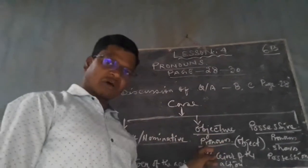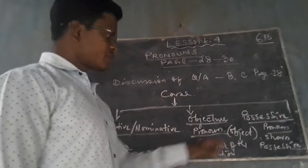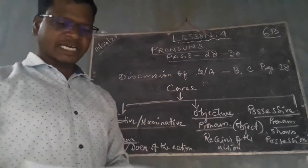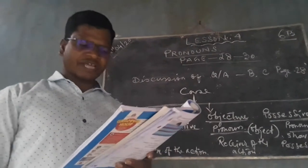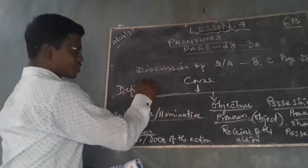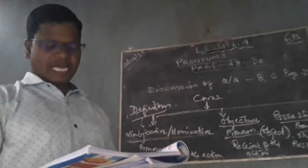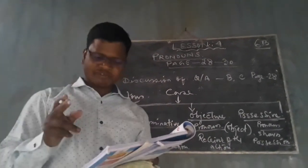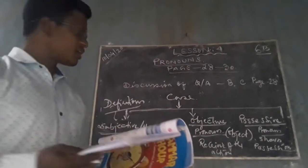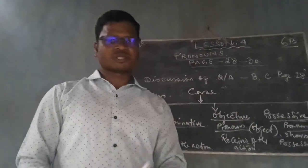If the pronoun is the receiver of the action, it is the objective case. If it shows possession, it is the possessive case. Write the definitions of subjective case, objective case, and possessive case, and make a chart as given on page number 29. The next day we will continue with the exercises. If any doubts are there, please inform me. Thank you.